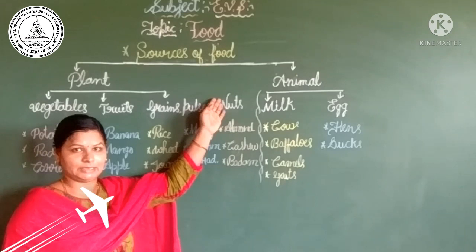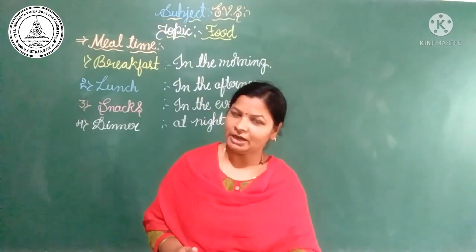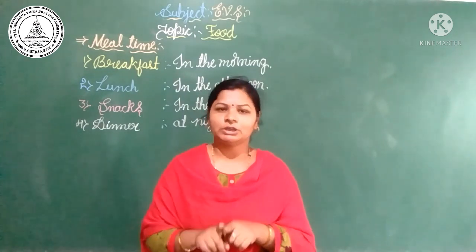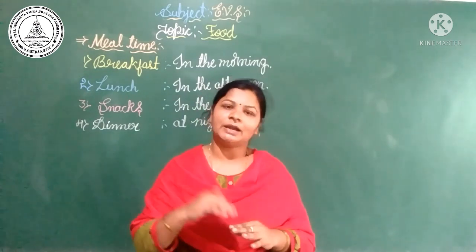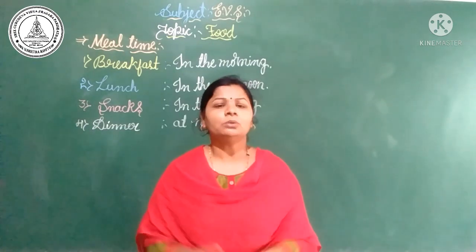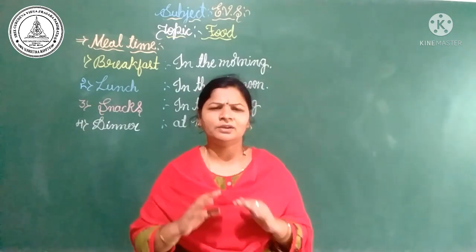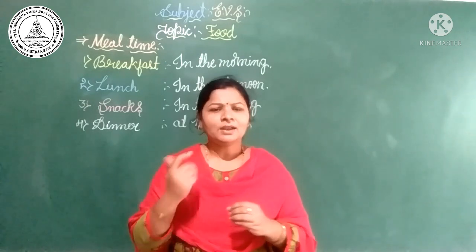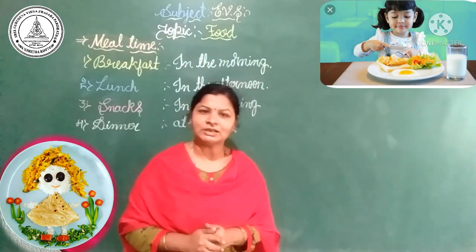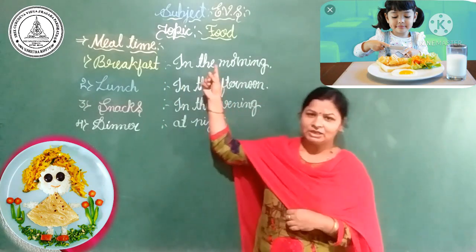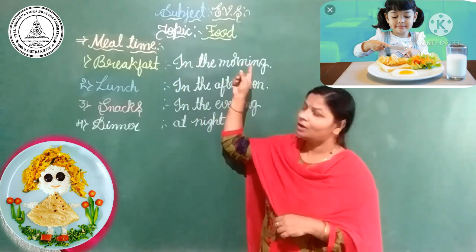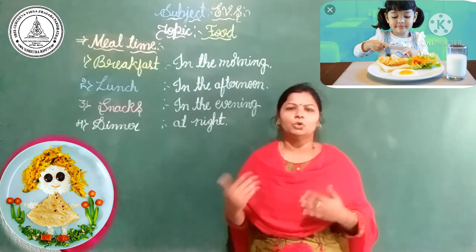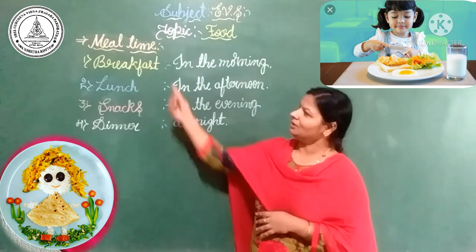We now understand which food products we get from animals and which we get from plants. Plants and animals are both sources of food. Using food from plants and animals, we prepare different types of delicious foods at home. We are having food at different meal times. First, children — yes, you are obviously right — the breakfast we have in the morning.